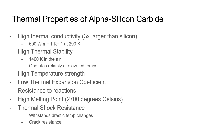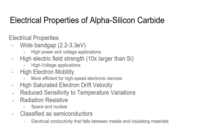Electrical properties of alpha silicon carbide: its wide band gap and high electric field strength make it great in high power and high voltage applications. Its high electron mobility makes it more efficient for high-speed electronic devices. It also has a high saturated electron drift velocity and reduced sensitivity to temperature variations. Its radiation resistivity makes it resistant in space and nuclear applications, and it is classified as a semiconductor because its electrical conductivity falls between metals and insulating materials.